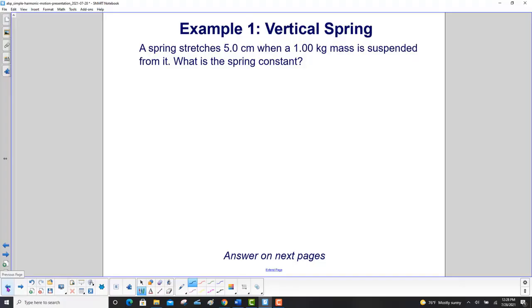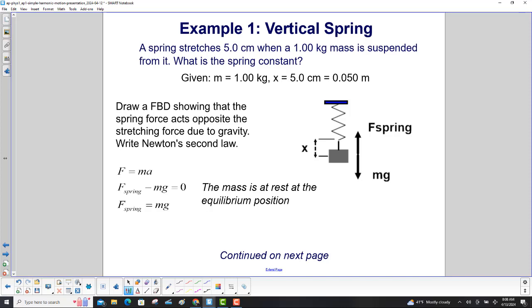A spring stretches five centimeters when a one kilogram mass is suspended from it. What is the spring constant? First, write the givens. We have the mass. And then we have the position, which is 5.0 centimeters. Make sure you convert that to meters right away.